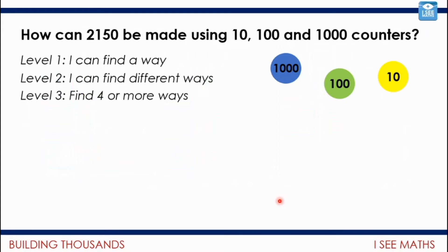Now here's the challenge. You get to level one if you can find one answer, level two if you can find different answers, and level three if you can find four or more ways. I'd say four ways is fantastic. How creative can you be in the ways you can make 2150 using thousands, hundreds, and tens? You don't need counters — you can just record how many of each you've used, like in the example. Pause the video and have a go.